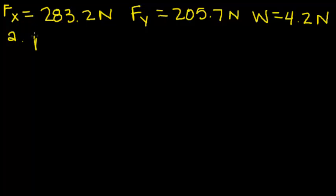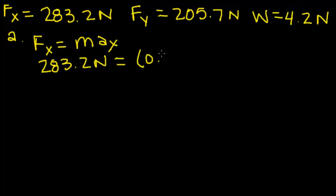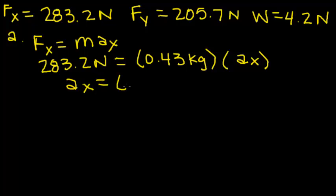So for part A, we have F equals MA in only the x direction for this part, because we're looking for the horizontal acceleration only. Fx, we know, is 283.2 newtons equals 0.43 kilograms times the acceleration in the x direction. So the acceleration in the x direction is going to come to 658.6 meters per second squared.